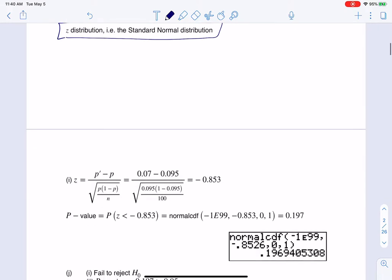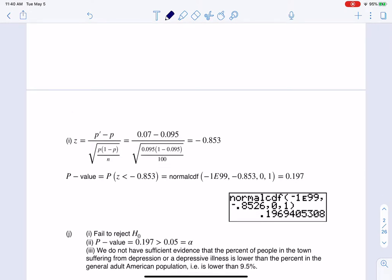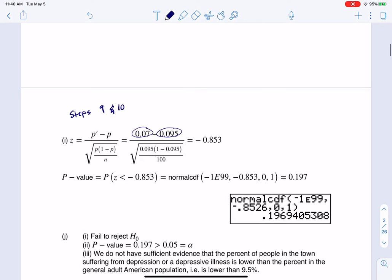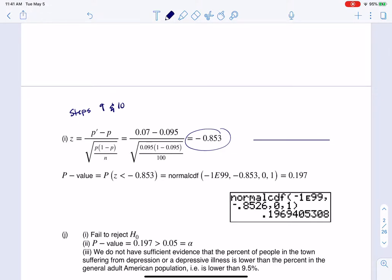So, okay, if it has to be greater than or equal to five, then we're on the Z distribution and we're good to go. If I want that P value, the first thing I need to do is get my test statistic. So this is going to be, this is the equivalent of steps nine and 10. So my sample proportion was 7%. My null proportion was 9.5%. I've got that standard error there. And when I crunch that number on my calculator, I get this test statistic of negative 0.853.